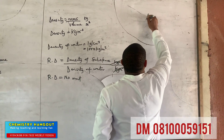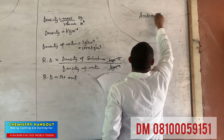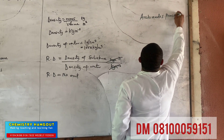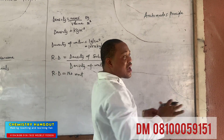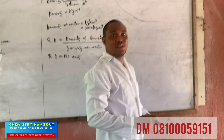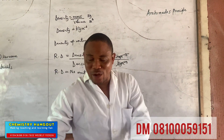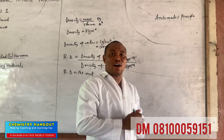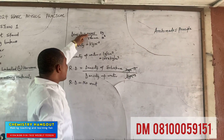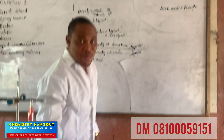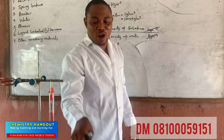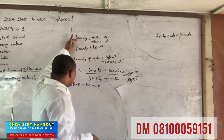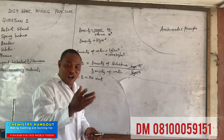Archimedes Principle — very important because these words are what the practical actually revolves around. We have talked about density, we have talked about relative density, and the reason why we talked about density is because we said that density is mass over volume. We have masses, and we are going to be immersing them into liquids. That's why we talked about density and relative density.